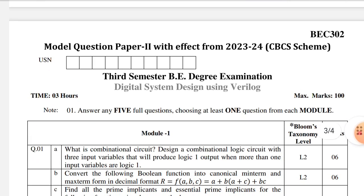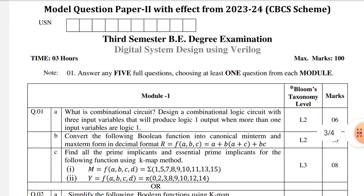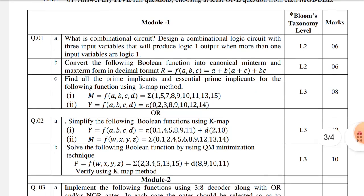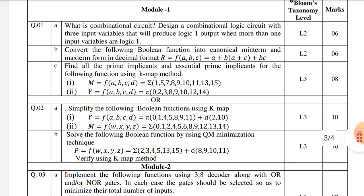In the second model question paper, they have given the first module to define the combinational circuit, and we need to design the combinational circuit with three input variables that will produce logic one output when more than one input is one. In the second question, we need to convert the Boolean function into canonical min-term and max-term form.